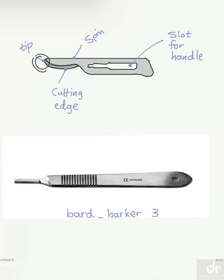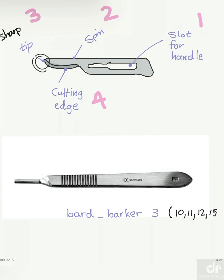Let's take a look at our incision tool. At the top is the blade and at the bottom is the handle. The blade has these parts: number one is the slot for the handle, where the handle will be inserted; number two is the spine; number three is the tip, which is sharp; and number four is the cutting edge, where we cut. The handle shown is called Bard Parker 3, and we use it for blades number 10, 11, 12, and 15.